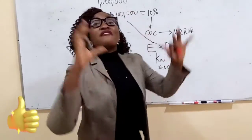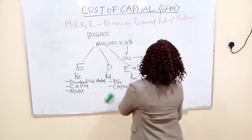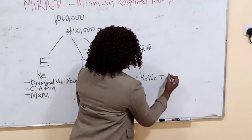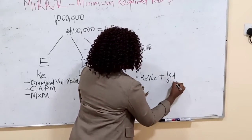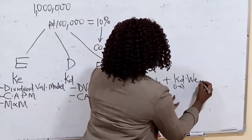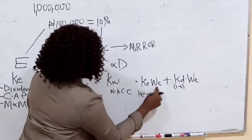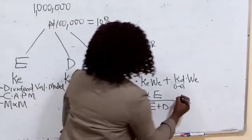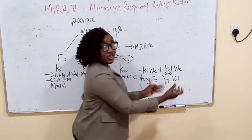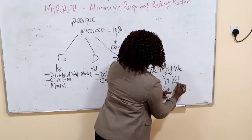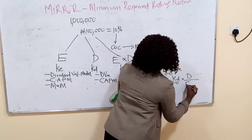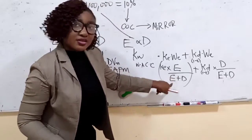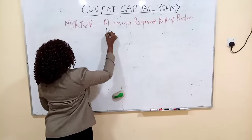When calculating WACC, there is a particular formula: take the cost of equity, multiply it by the weight — the proportion of equity — and add it to the cost of debt. This cost of debt must be the post-tax cost of debt. The weight means equity proportion over the total capital. For example, if equity is 70 and debt is 30, it would be 70 over 70 plus 30.